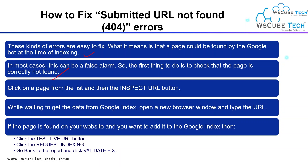Check whether the page is a 404 error or whether the page is fine. When you find that your page is fine, simply click on submit URL as previously discussed. While waiting to get the data for the Google index, open a new browser window and type your page URL. If the page is found, click on the test live button, then click request indexing. Go back to the report and click validate. For validate fix, you have to completely resolve all the errors — if you are done with all the error parts, then click on validate fix.